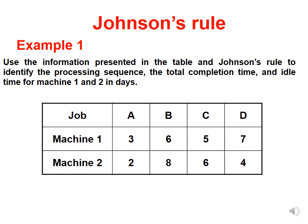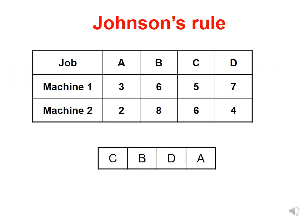Example 1: Use the information in the table and Johnson's Rule to identify the processing sequence, the total completion time, and idle time for machines one and two in days. Looking at jobs A, B, C, and D, we see that the shortest activity time is job A on machine two. We sequence job A last and eliminate it from the table.